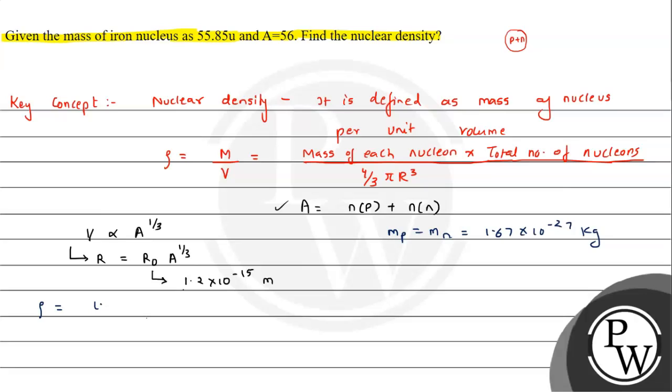So mass of each nucleon means 1.67 times 10 raised to minus 27, multiplied by total number of nucleons, known as mass number A, divided by 4 by 3.